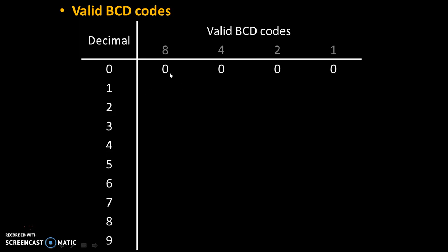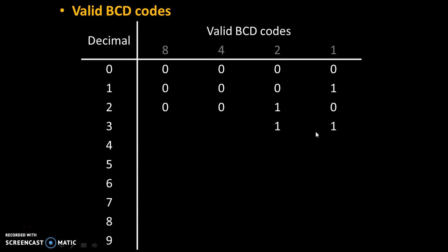So 0 can be written as 4 zeros. 1 can be written as single 1 because only this digit is needed, remaining 3 digits are 0. For 2, only this digit is needed, remaining 3 digits are 0. For 3, 2 plus 1 is 3, that's why these 2 digits are 1, remaining 2 digits are 0.